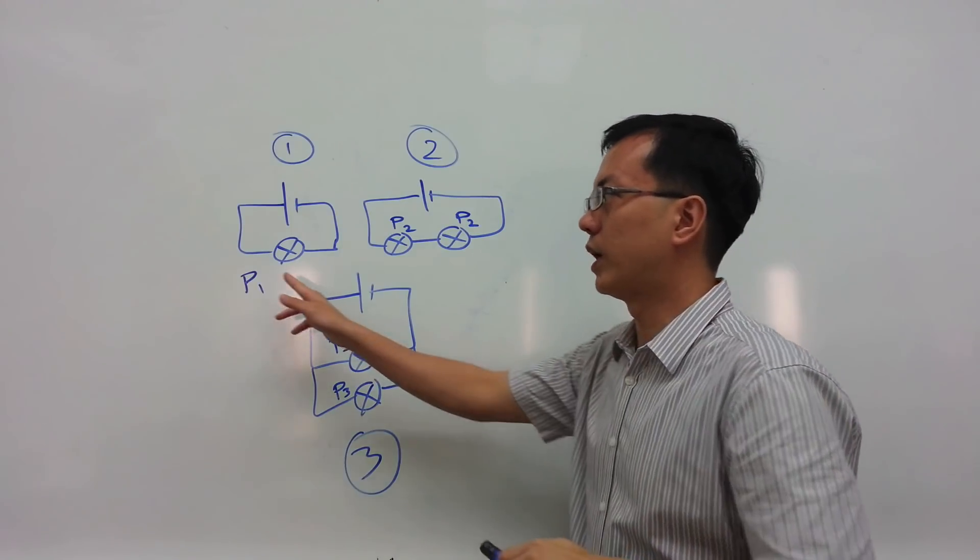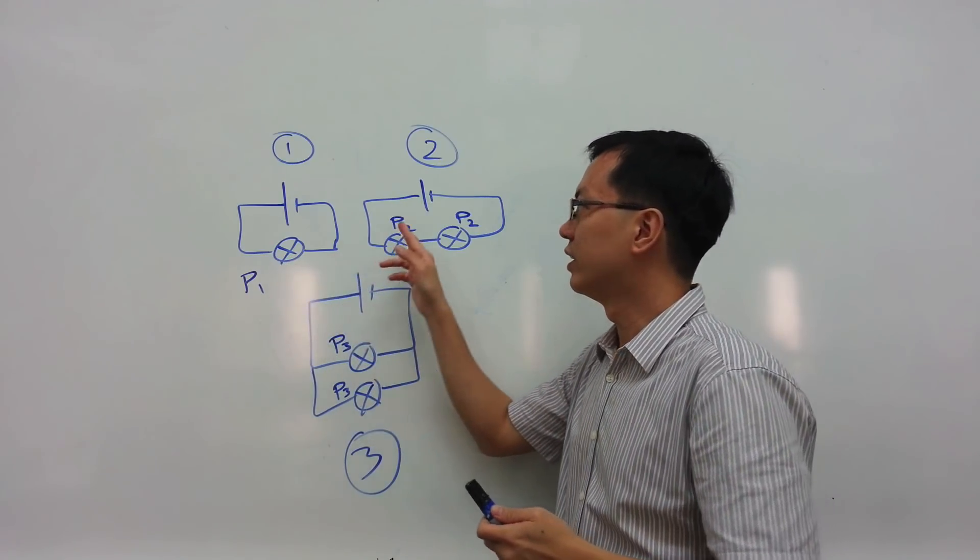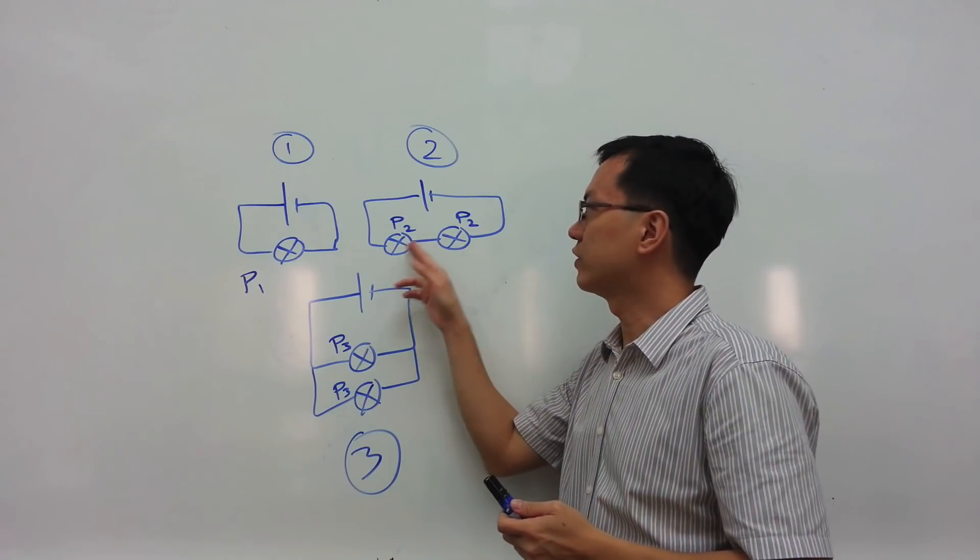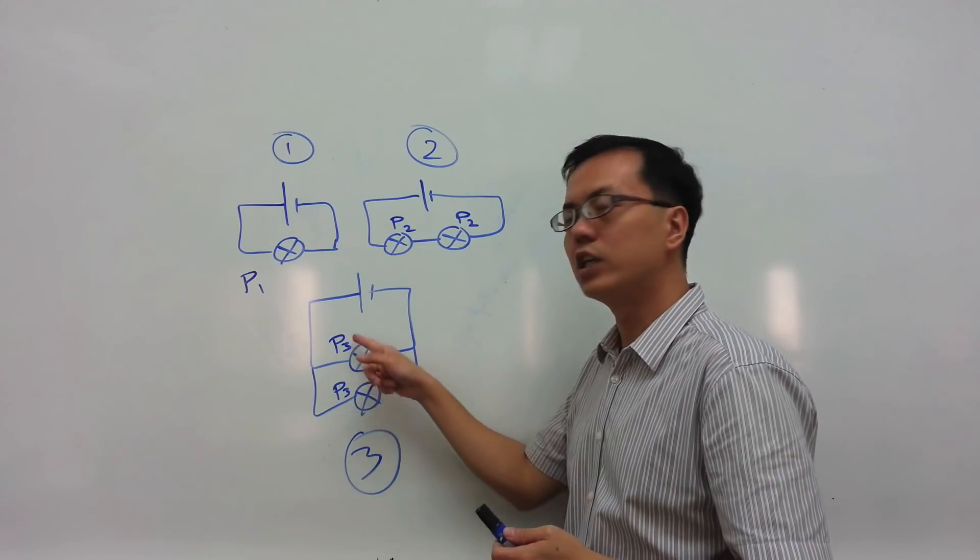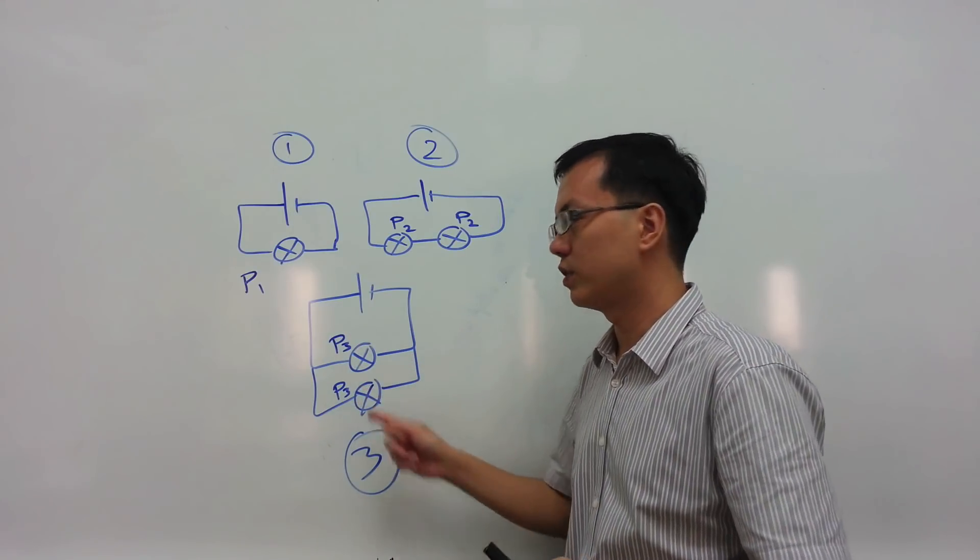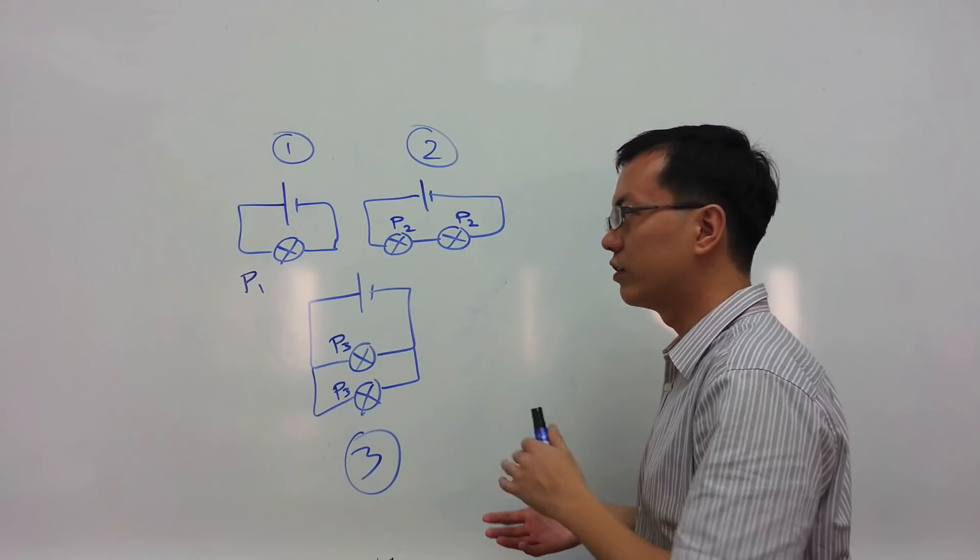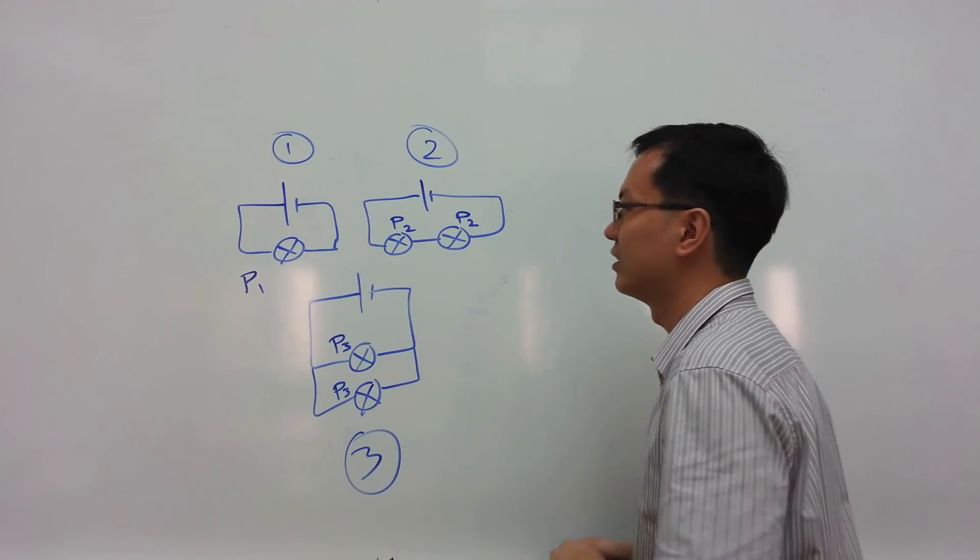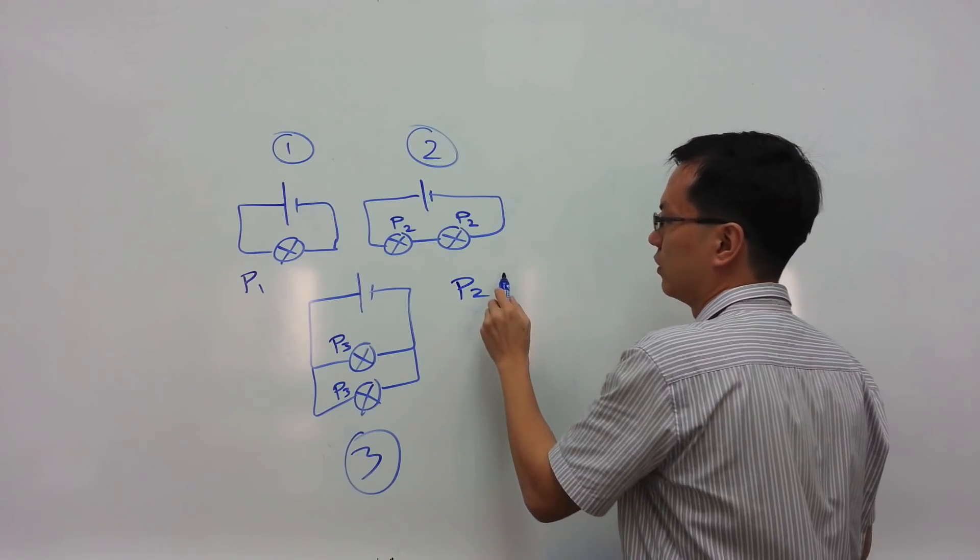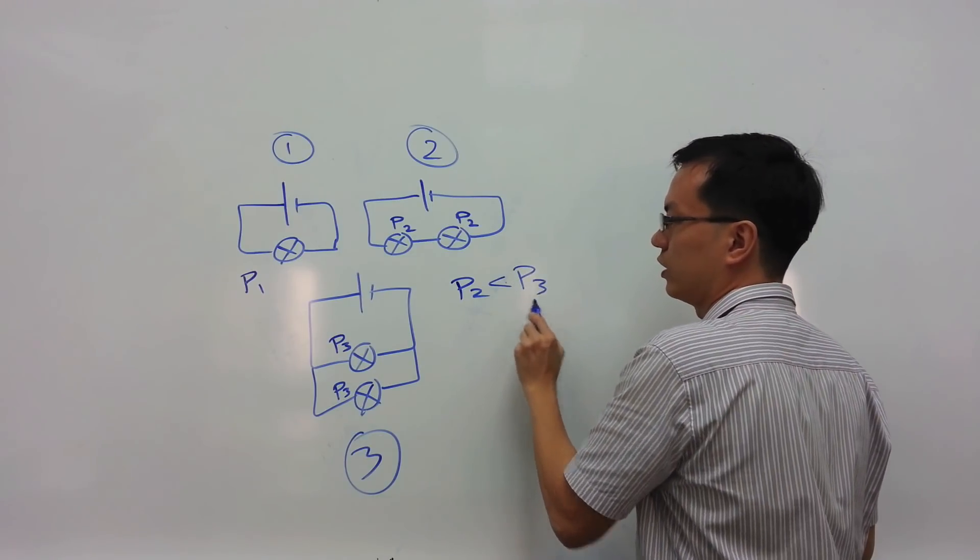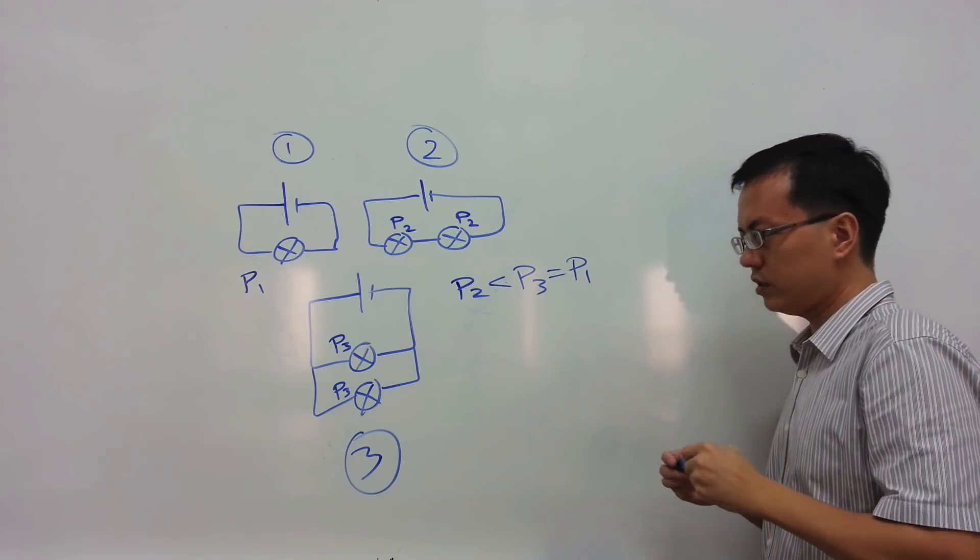Let's label the power dissipated within the light bulb in circuit diagram 1 as P1, and the power dissipated within each of the light bulbs as P2 in circuit diagram 2, and the power dissipated within each light bulb in circuit diagram 3 as P3. So in order of increasing brightness, P2 will be the dimmest, followed by P3, which is equal to P1. Why is that?